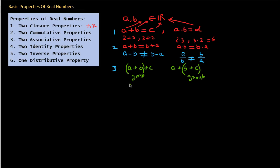Similarly, if you are multiplying A, B, and C, you can put the bracket on A and B or on B and C — it will not make any difference. A times (B times C) will be equal to (A times B) times C. So this was the associative property.